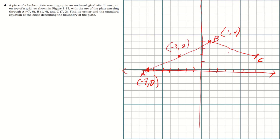For chord BC with points one, four and seven, two: we add one plus seven equals eight, divided by two equals four for x; and four plus two equals six, divided by two equals three for y. So the midpoint of BC is four, three. This midpoint is also on the perpendicular bisector that passes through the center.